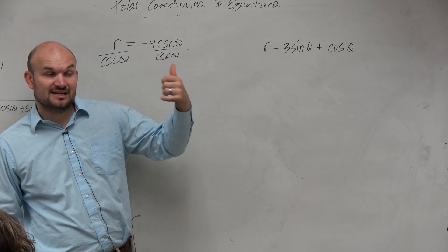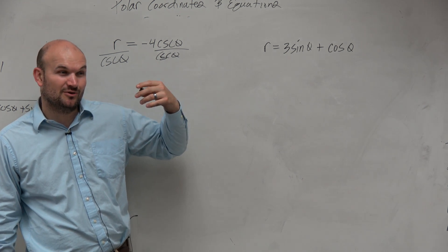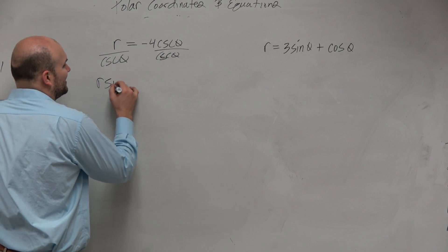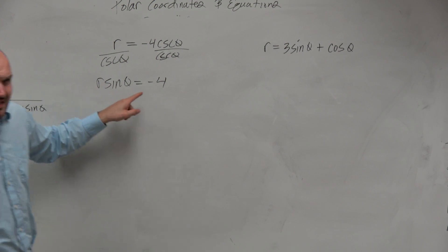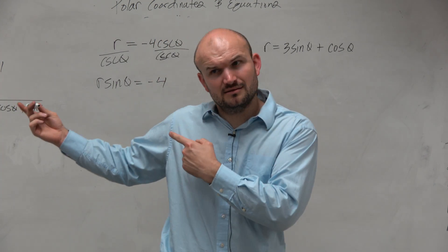So dividing by cosecant is the same thing as multiplying by its reciprocal, which is... Oh, wow. That's awesome. What does r sine theta represent? Y.